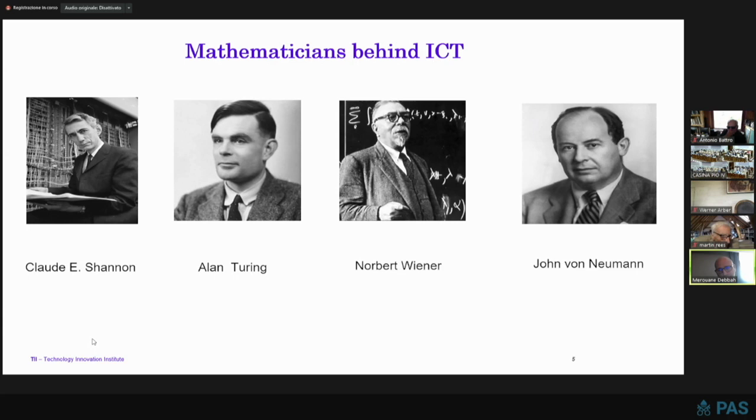Alan Turing with everything related to AI. Norbert Wiener with his book on signal processing, which has had huge impact in the field of ICT, especially in all these complexity reduction algorithms. And John von Neumann with respect to different aspects related to game theory, but also the von Neumann architecture, which is the heart of how we do computing.